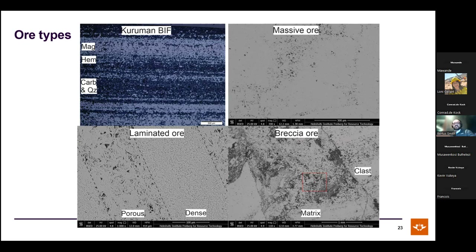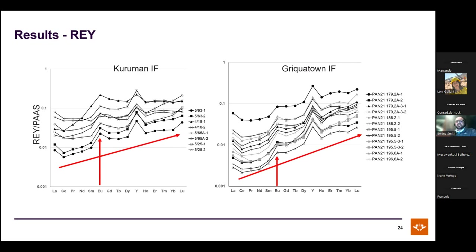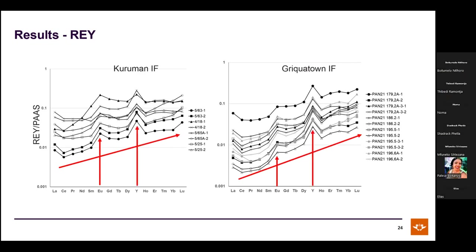Reanalysis of the Kuruman and Griquatan iron formations shows classic signatures studied extensively over the last 20-30 years: a strong seawater-like rare earth element and yttrium (REY) pattern with heavy-over-light rare earth element enrichment, positive yttrium anomaly, and positive europium anomaly.